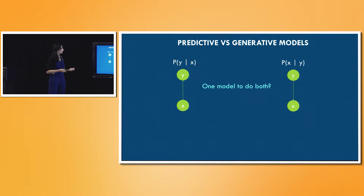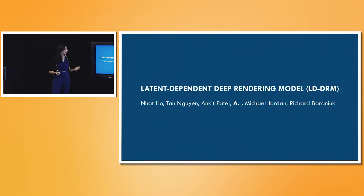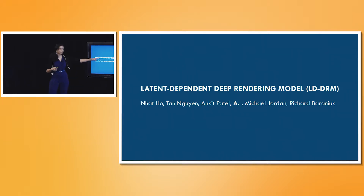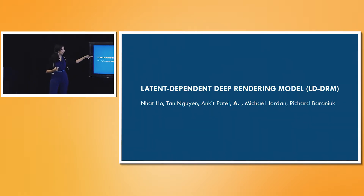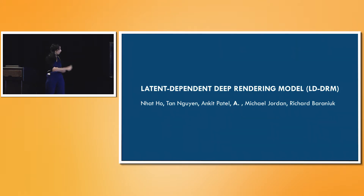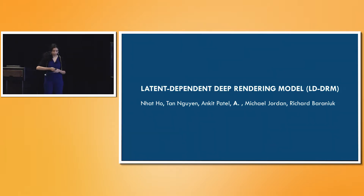We call this framework the Latent Dependent Deep Rendering Model. There is a rendering model, it's deep with multiple layers because the convolutional network is also deep, and there are latent variables that capture variations in this process. This is joint work with Tan, Nat, Ankit, Michael Jordan, and Rich Baranyuk. The intuition is we want to go from the object category to the image — not directly, but through a whole set of intermediate rendered images, coarse to fine-grained.